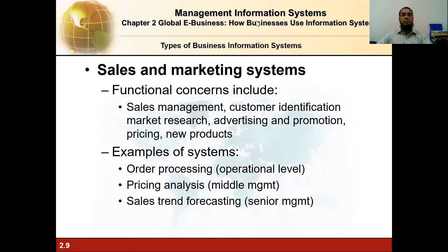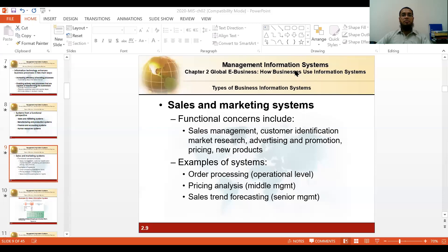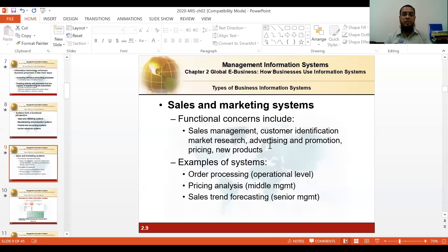Sales and marketing systems. Functional concerns include sales management, customer identification, marketing research, advertising and promotion, pricing, and new products — all performed by sales and marketing people. Examples of systems include order processing, pricing analysis, and the sales trend process.